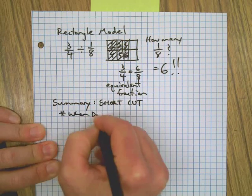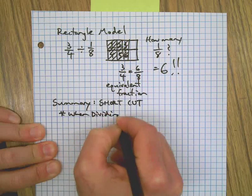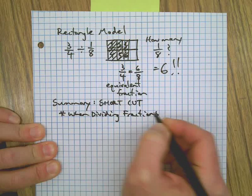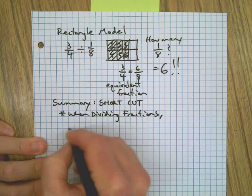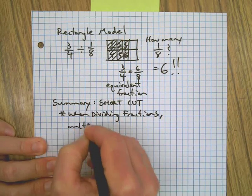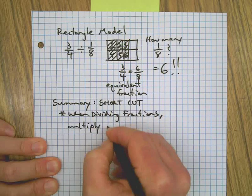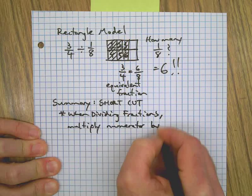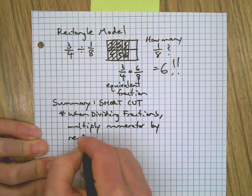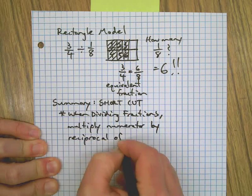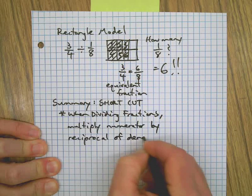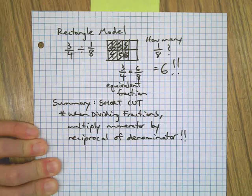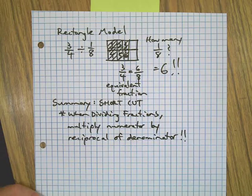When dividing fractions, I'm writing as fast as I can and hopefully you can still read it. All you do is multiply the numerator by the reciprocal of the denominator. That's it. And the proof is on the other page.